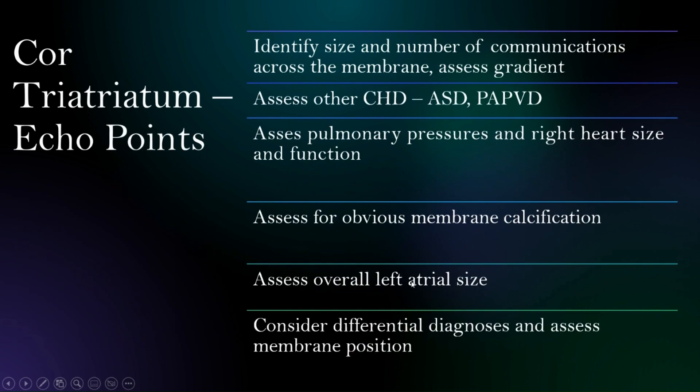When thinking about the echocardiogram, we want to identify the size and number of communications and the relative gradient across the communication. We also consider other types of congenital heart disease that can be seen, right heart size, pressures and function, and whether there is any obvious membrane calcification. We consider overall left atrial size and also the differential diagnosis in terms of membrane position.